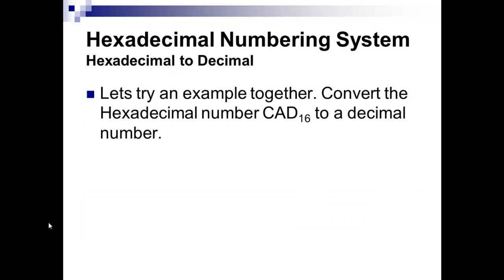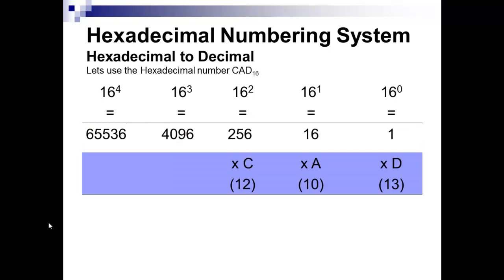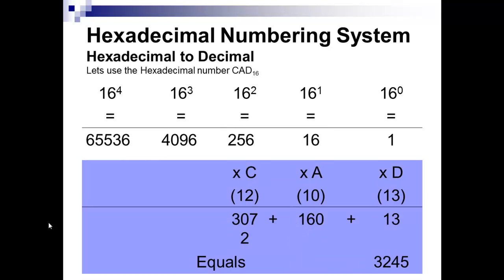Try another one together. Let's do CAD. Let's convert that to a number. Again, put it in a chart. So you have 1, 16, 256, on and on. Put CAD underneath, and C is a 12, A is a 10, D is a 13. Multiply those, and then add them together. And sorry about this, but it's 3,072 is what it should be. And then it's 160, and then 13. So you add those up, and you get 3,245.